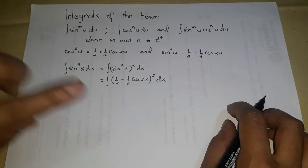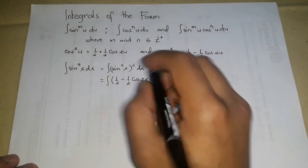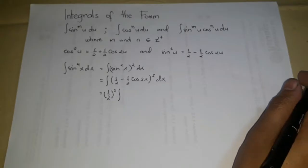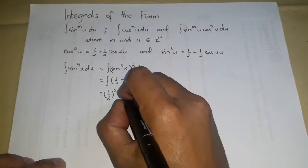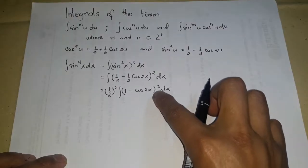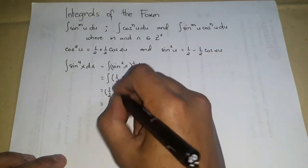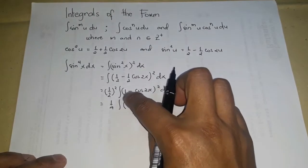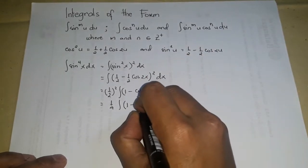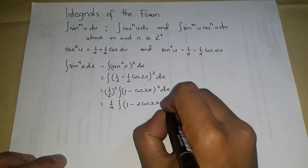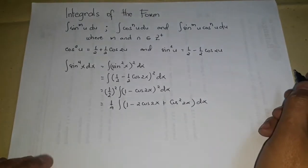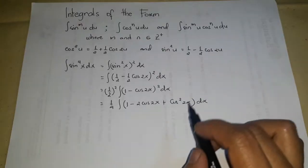To simplify, factor out the 1/2 but raise it to the second power, giving (1/2)² times the integral of (1 − cos(2x))² dx, which equals 1/4 times the integral of (1 − cos(2x))² dx. Expanding: 1 − 2cos(2x) + cos²(2x) dx. Notice that another cos²(2x) term appears.